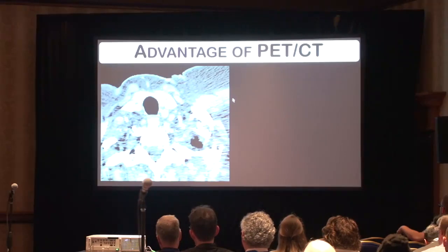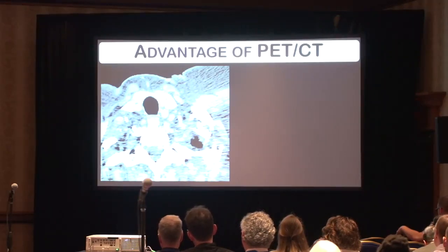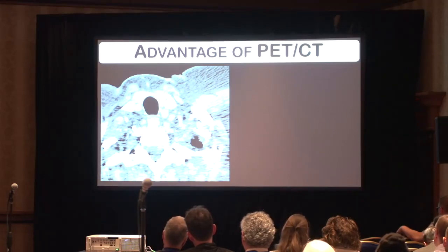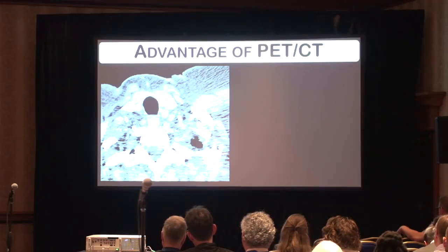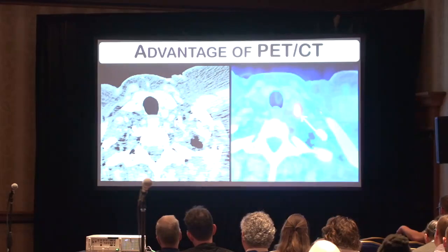PET is also very good for identifying involved lymph nodes. Here we had this CT where a patient had a small lymph node in the lower left neck. Based on CT size criteria, we wouldn't be too concerned about this normally on CT. But on PET it was very FDG-avid — so this patient did have spread to this lymph node.